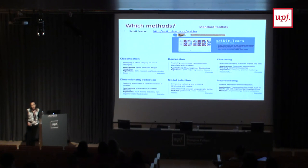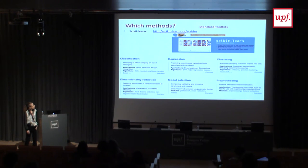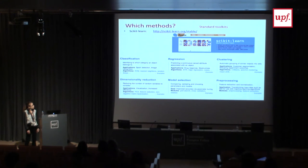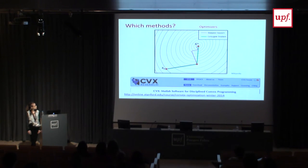There are many other methods in machine learning, and many tutorials and available toolkits and free software. One is Scikit-learn, a free Python library that allows a lot of preprocessing and application of many manifold learning and machine learning algorithms. For the optimization part, one option is the CVX library in MATLAB, though many others exist.